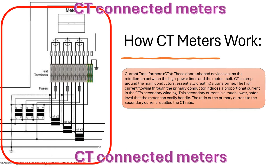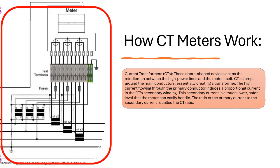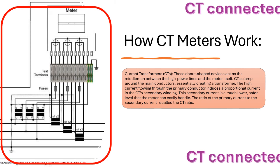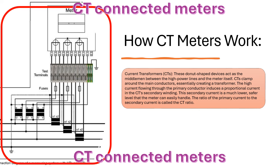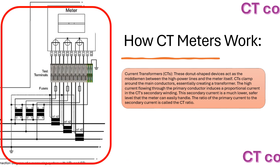How CT Meters Work: Current Transformers (CTs). These donut-shaped devices act as the middlemen between the high power lines and the meter itself. CTs clamp around the main conductors, essentially creating a transformer.